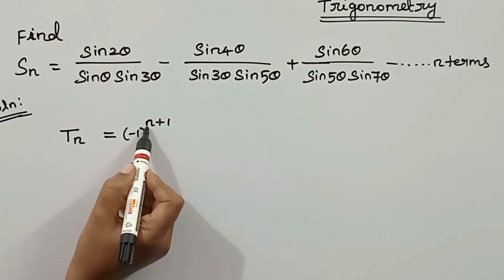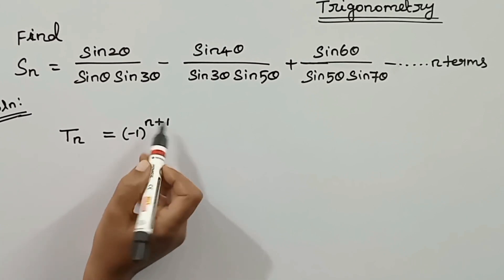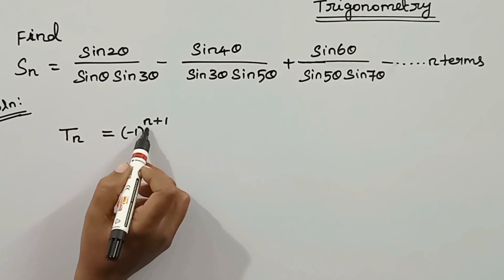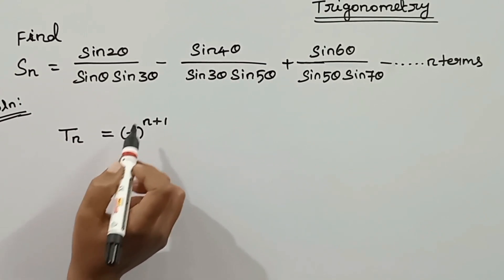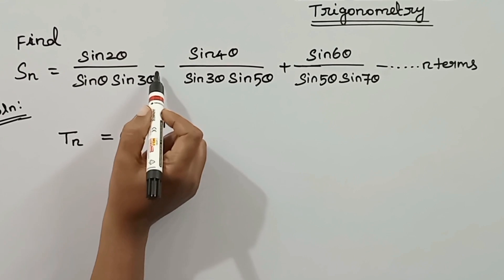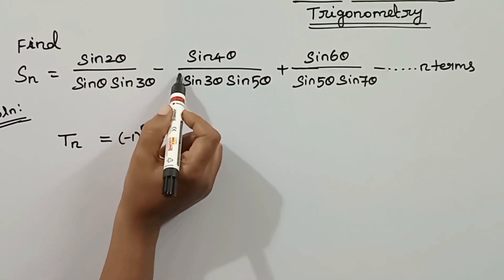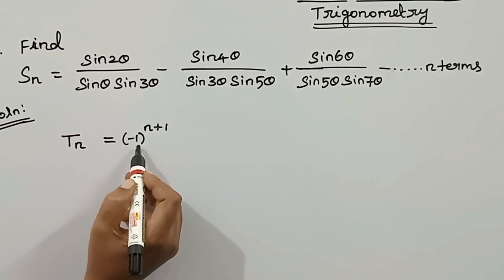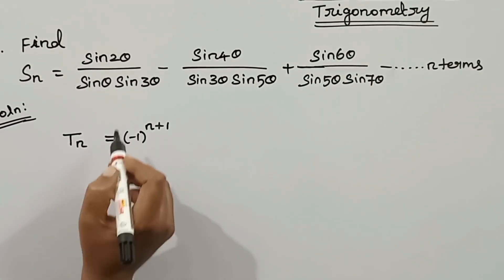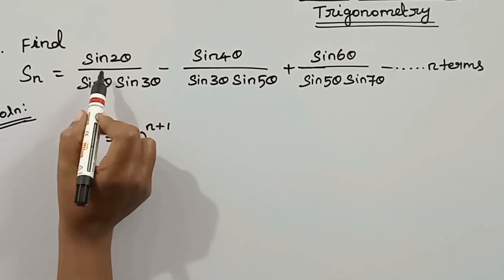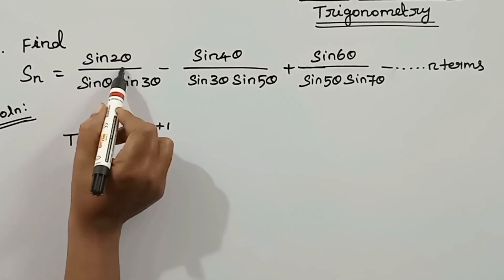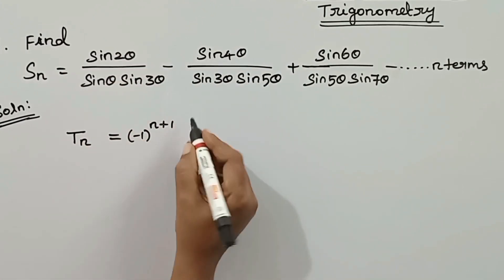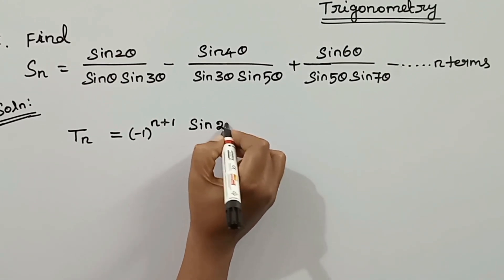We substitute 1 as 2. Then minus 1 to the power 2 gives plus 1. If this term is positive, then it exists. We substitute 2 as 3, meaning minus 1 whole cube gives minus. So we have alternating signs. The next term in the numerator is sin 2 theta, sin 4 theta, sin 6 theta. The common difference is 2, so the numerator is sin 2n theta.